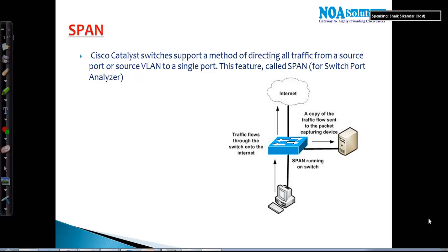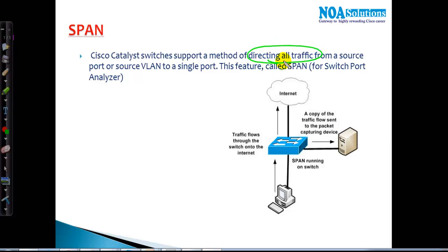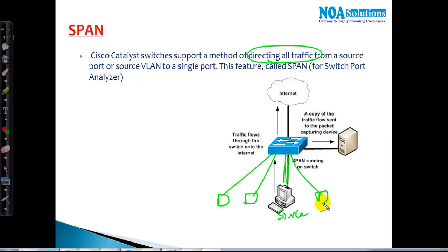In this section we'll be discussing a topic called SPAN. SPAN stands for Switch Port Analyzer. Most Cisco Catalyst switches support a method of directing all your traffic from one specific port to another specific port. The source can be a single host or multiple hosts, and the source can also be a VLAN.